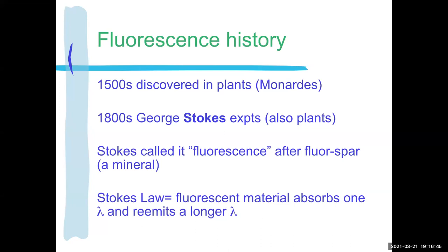Fluorescence has its own history. It was discovered in the 1500s in plants by one artist. In the 1800s, George Stokes did experiments — he did a lot of different kinds of science, so you might come across him in different classes, also using plants. He named it 'fluorescence' after a rock — a very pretty green-purple, slightly transparent rock. If you're into rocks and gem shows, you've come across it. Rocks also fluoresce.